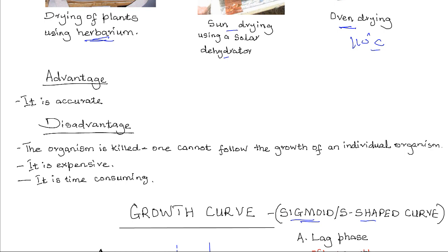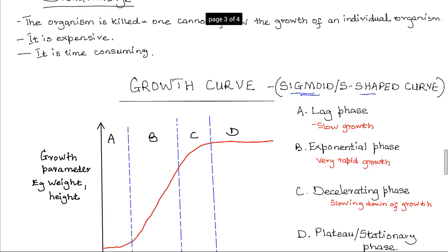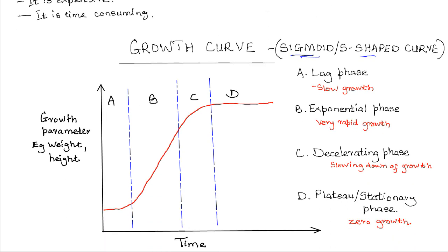For many organisms, this growth curve has a sigmoid, or S-shaped, form. This sigmoid curve has four distinct phases: the lag phase, exponential phase, decelerating phase, and the plateau phase. This growth pattern shows that growth tends to be slow at first, then speeds up, and finally slows down as the adult size is attained.